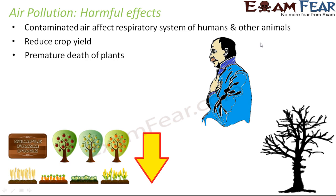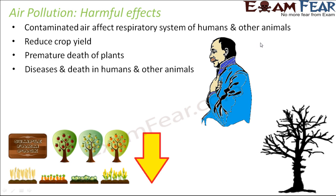Premature death of plants is another harmful effect. It can even cause death of plants because sometimes the air might contain such harmful chemicals that as soon as they get inside the plants, they can completely kill the plant and its cells. In case of humans and other animals also, if the contamination becomes too severe, it can even lead to death. Many chronic diseases can also be caused due to breathing problems.